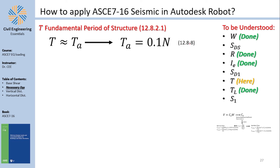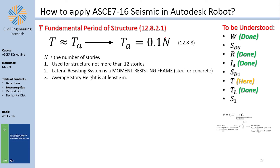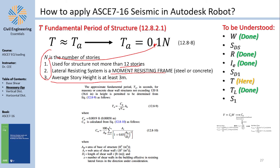An alternative equation 12.8-8 gives TA = 0.1N, where N is the number of stories, but this applies only to moment-resisting frames with more than 12 stories and a story height of at least 3 meters.